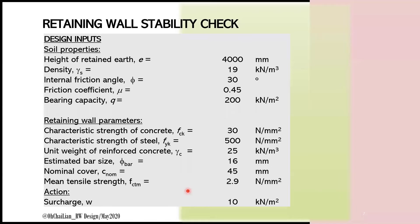These are the design inputs for a retaining wall. Soil properties such as height of retained earth, density, internal friction angle, friction coefficient, and bearing capacity. The retaining wall parameters include characteristic strength of concrete and steel, unit weight of reinforced concrete, estimated bar size, nominal cover, mean tensile strength, and the action surcharge.